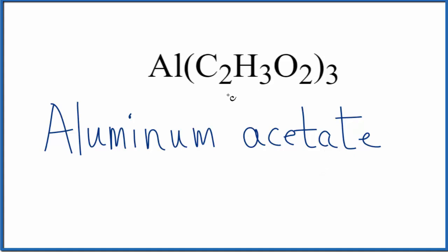And again, sometimes this will be CH3COO, another way to write the acetate ion. So the name for Al(C2H3O2)3 is aluminum acetate.